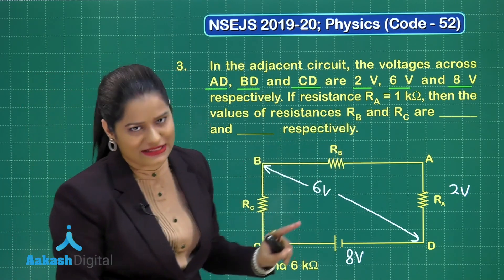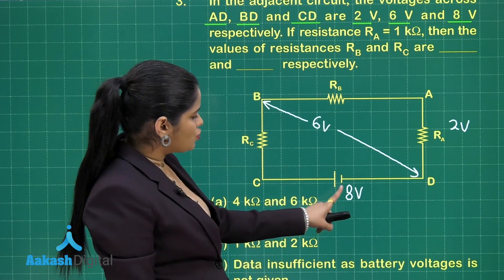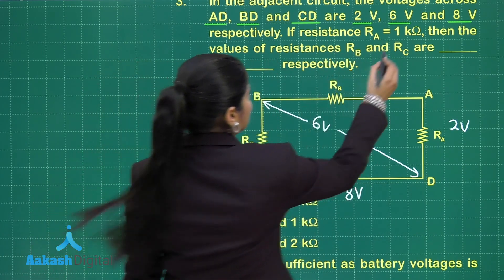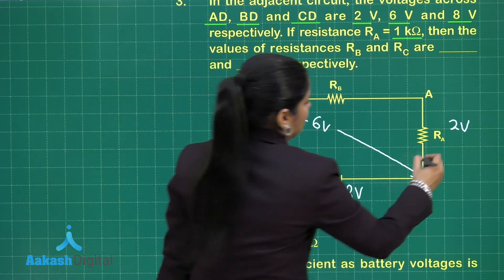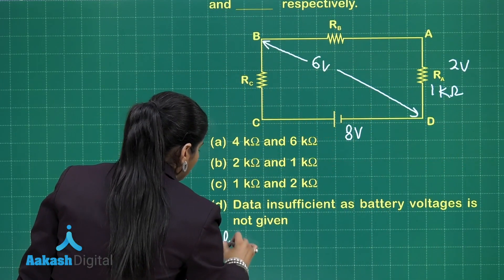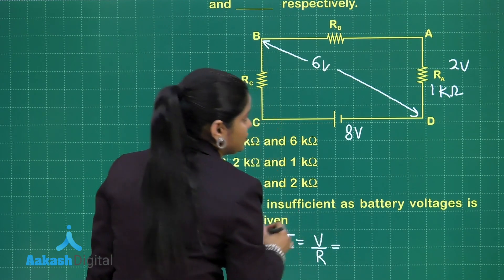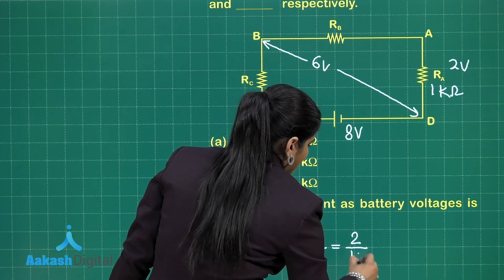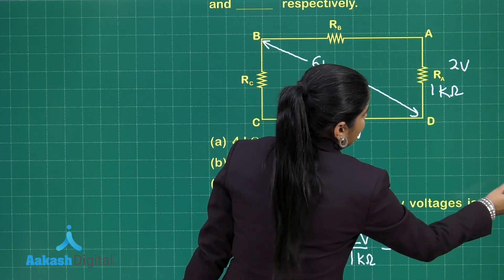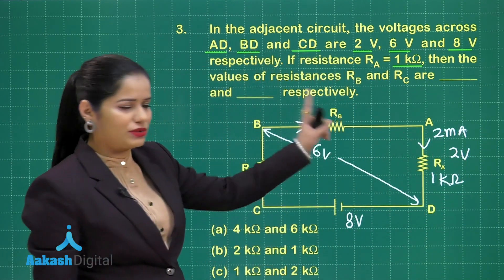The total voltage is 8 V and the value of RA is given as 1 kΩ. Using Ohm's law, the current through the circuit is V/R = 2 V / 1 kΩ = 2 milliamperes. This 2 mA is also the current flowing through RB since it is a series circuit.